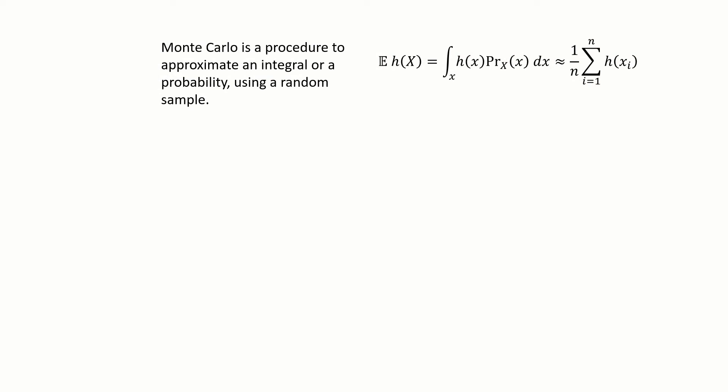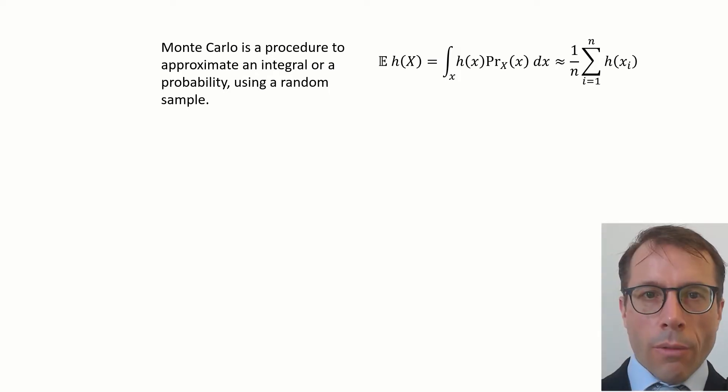Monte Carlo is a procedure for approximating an integral using a random sample. Here's the formula from section 5.1. It says if we want to find the expected value of some function h of x, where x is a random variable, then we can take a sample of values from x and find the average of h applied to those samples.